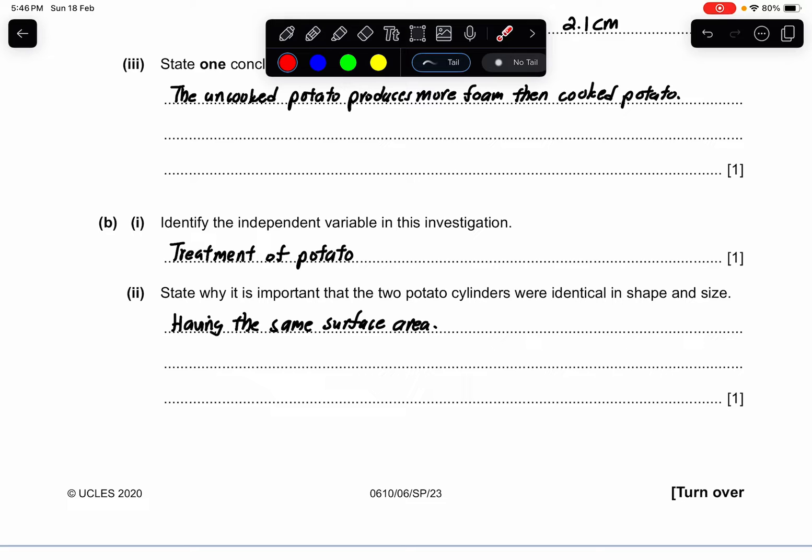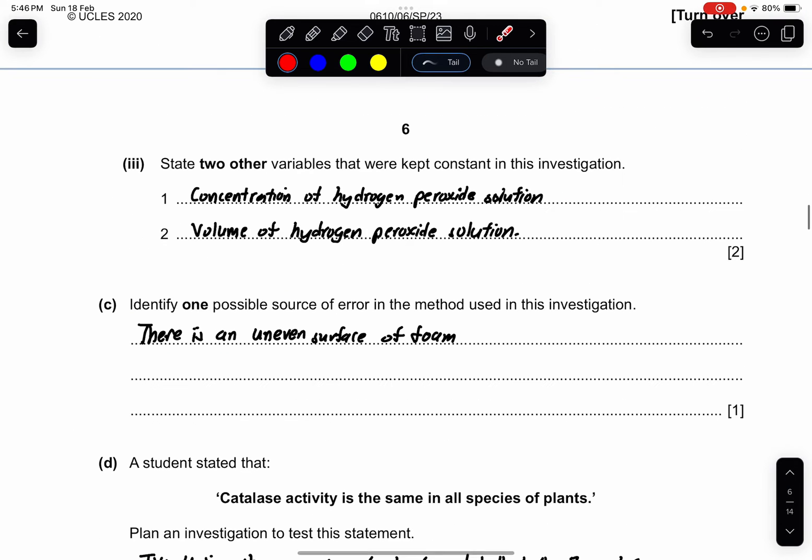Part 2: state why it is important that the two potato cylinders were identical in shape and size. When they have the same shape and sizes, it means that they have the same surface area. So this is a key answer: same surface area relates to shape and size.